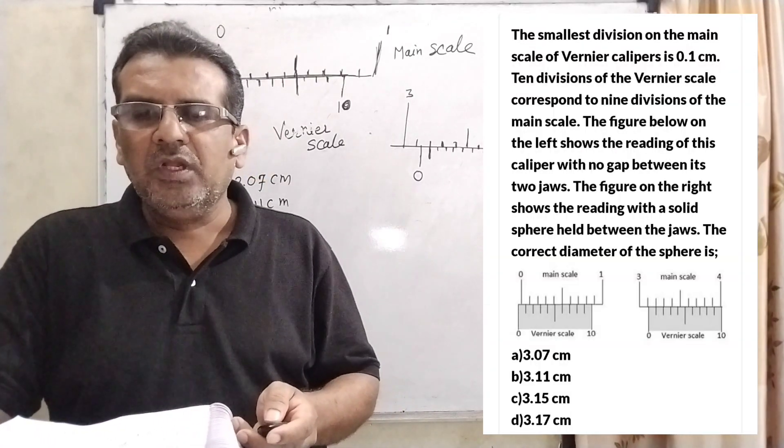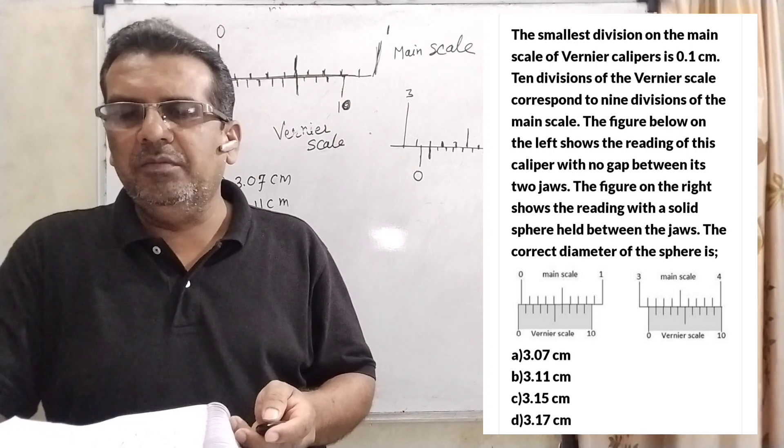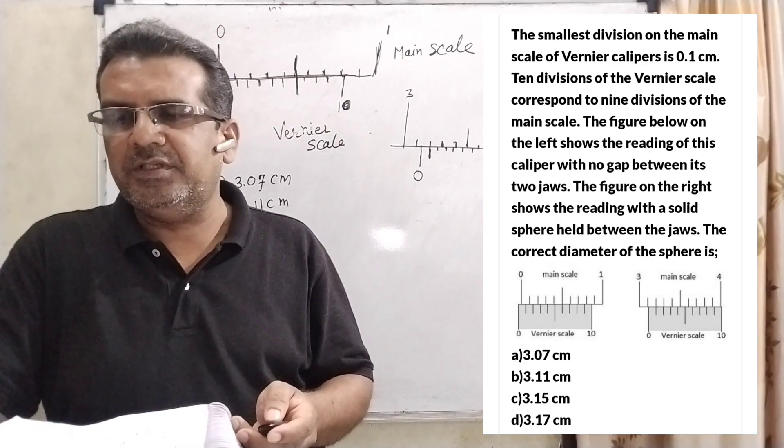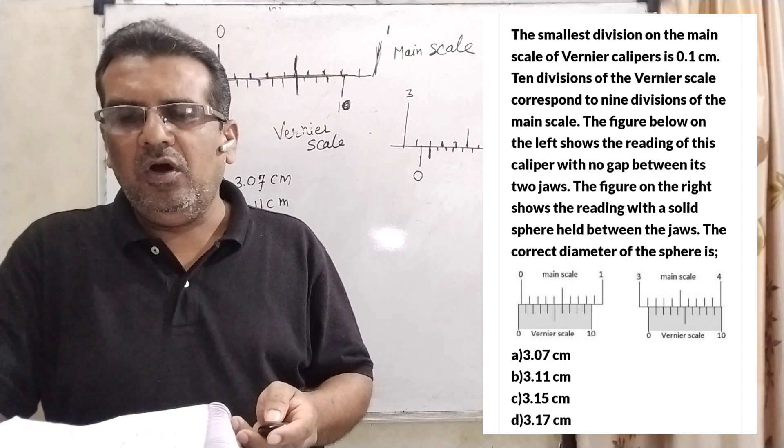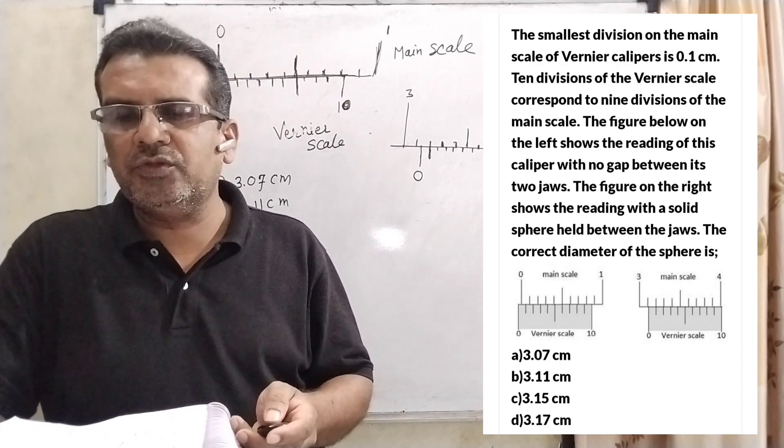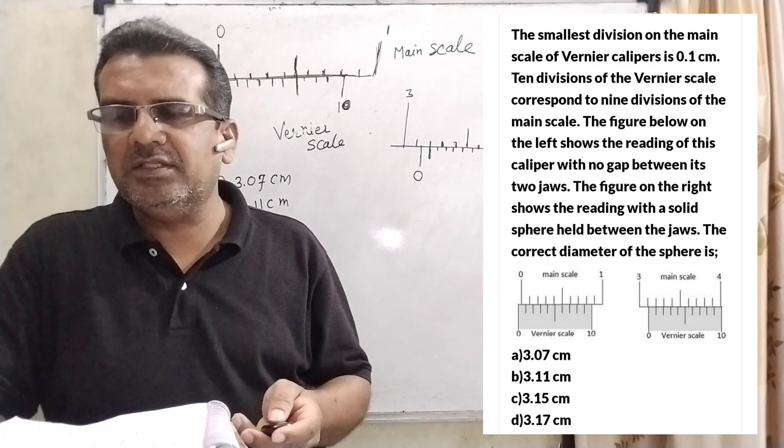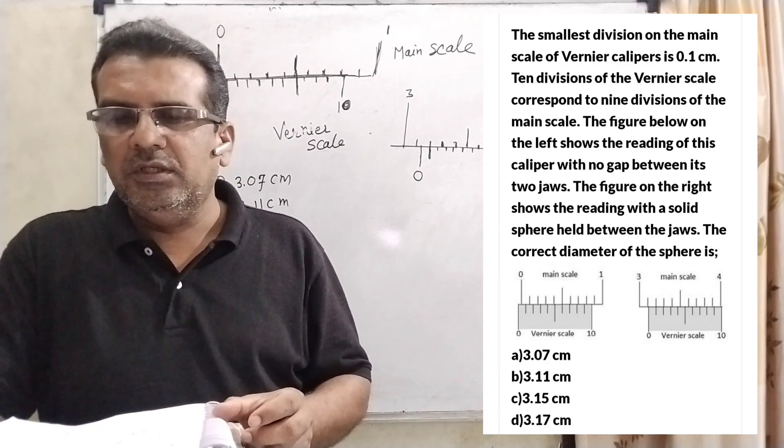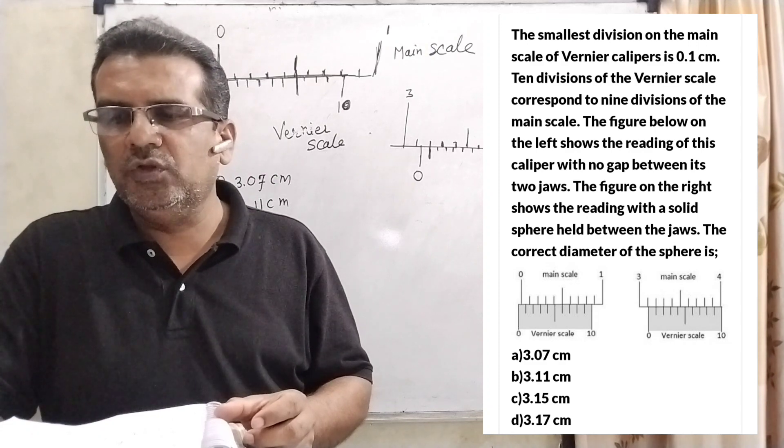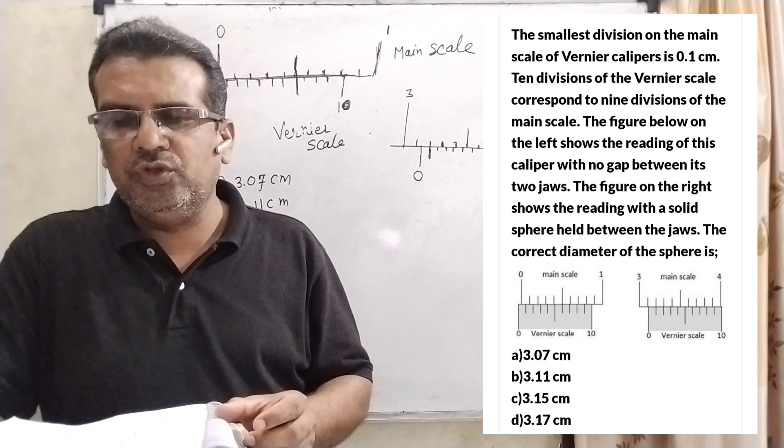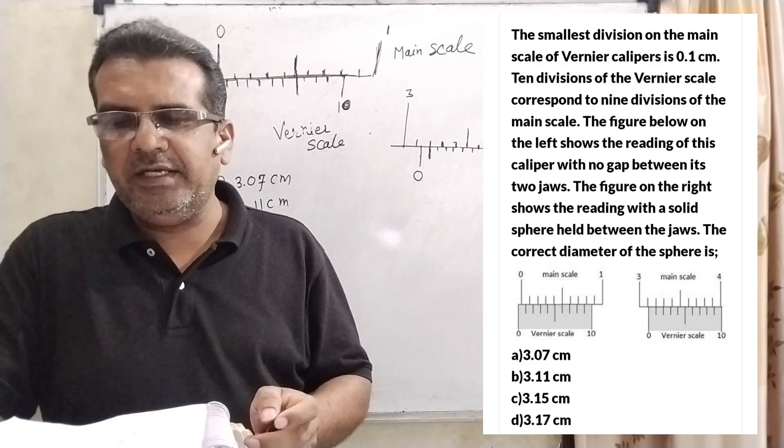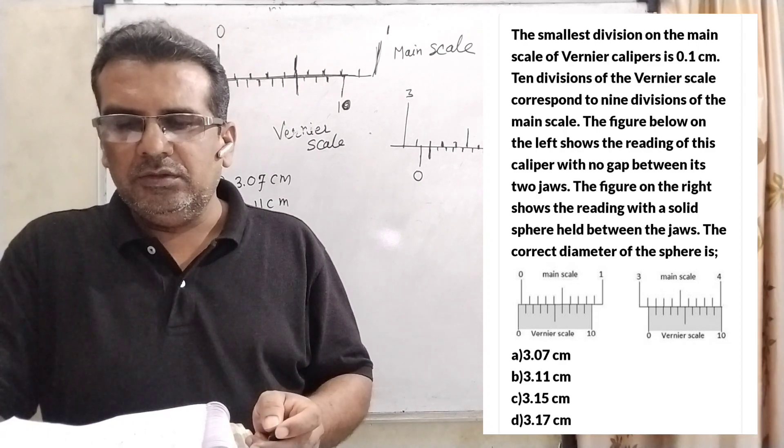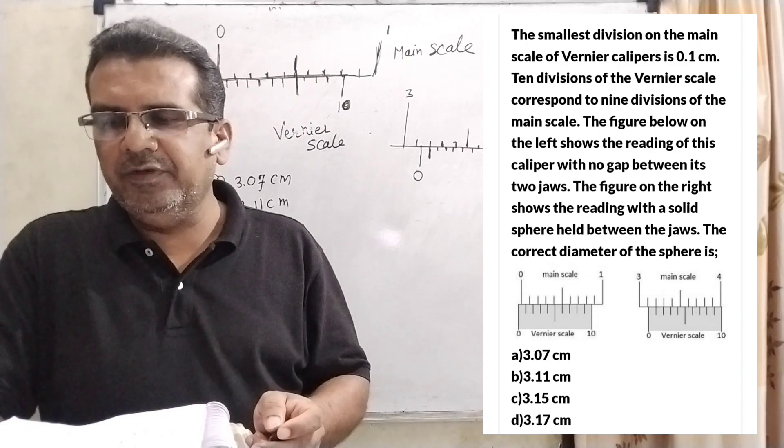Now here is the question. The smallest division on the main scale of Vernier calipers is 0.1 cm. Ten divisions of the Vernier scale corresponds to nine divisions of the main scale. The figure below on the left shows the reading of the calipers with no gap between its two jaws. The figure on the right shows the reading with a solid sphere held between the jaws.